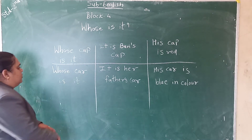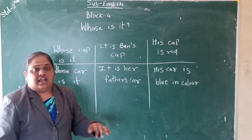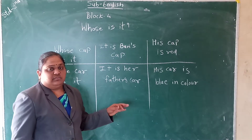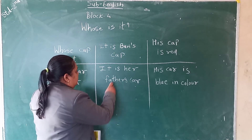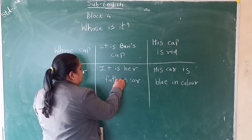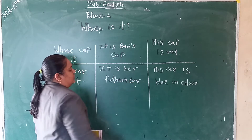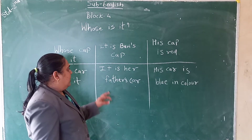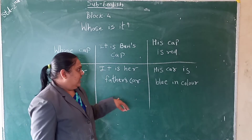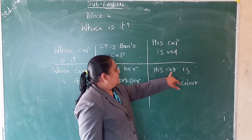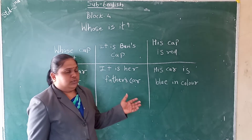Whose car is it? In that lesson, a car came inside the house. Whose car was it? It is his father's car — Ben's father came. Because of the weather not being clear, he did not go out of station and he came. When the car came, his father came inside. It is his father's car. His car is blue in color.